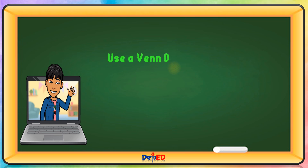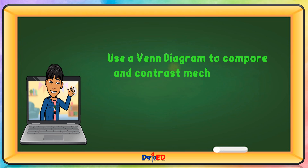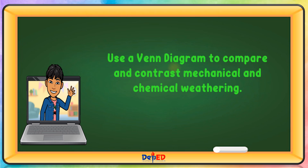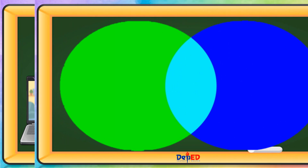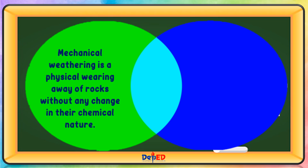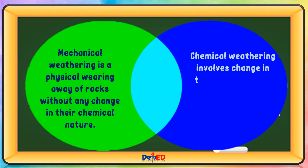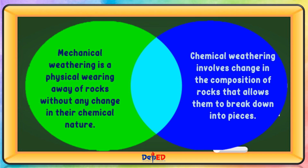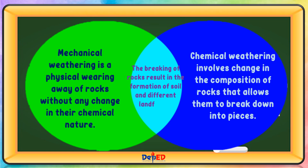Use a Venn diagram to compare and contrast mechanical and chemical weathering. Mechanical weathering is a physical wearing away of rocks without a change in their chemical nature, while chemical weathering involves a change in the composition of rocks that allows them to break down into pieces. They are the same in that both result in the formation of soil and different landforms.